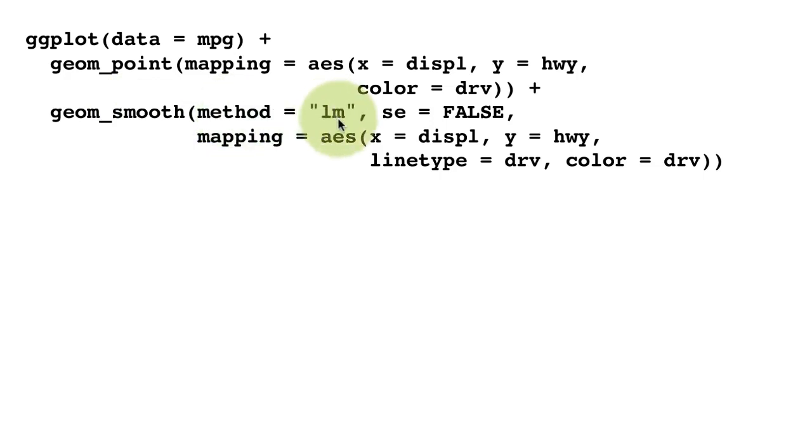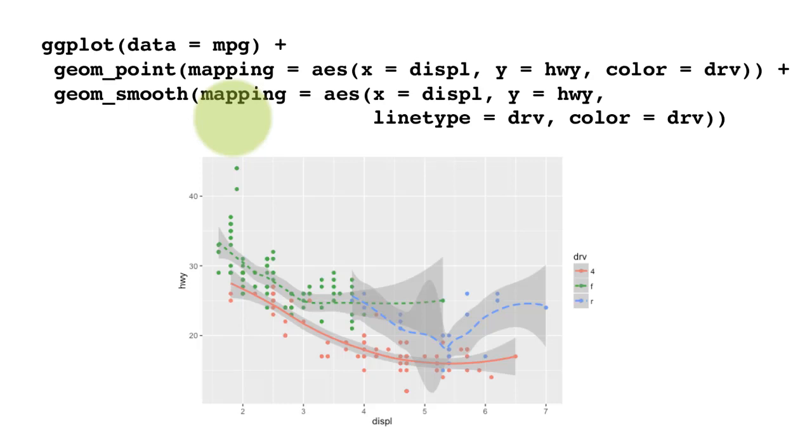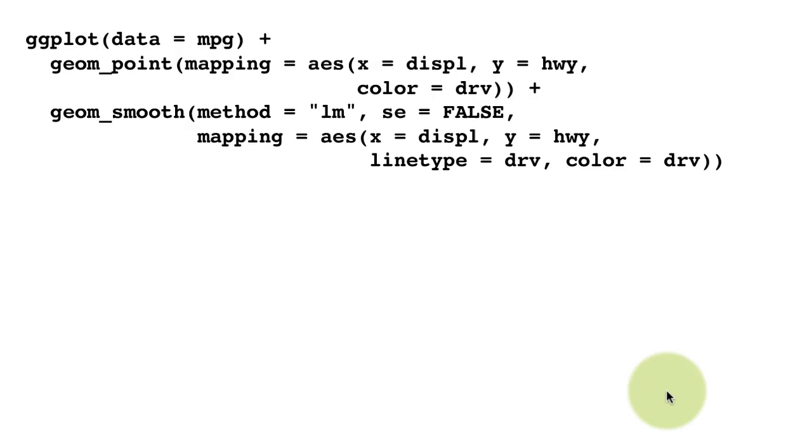We have said method equals lm within quotes. Earlier, we did not pass the method argument. We didn't say what the method was. And by default, it uses a locally smooth line, as I mentioned earlier. But we can tell it to plot the regression line instead of the locally smooth line by just saying method equals lm.